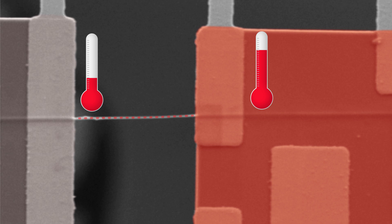The nanowire transfers heat from one of the suspended platforms to the sensor platform. The temperature rise in the sensor platform is measured by measuring the change in resistance.